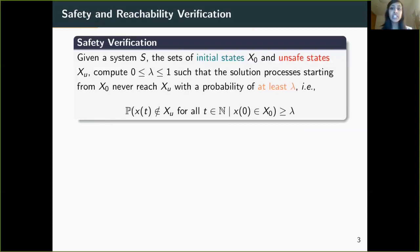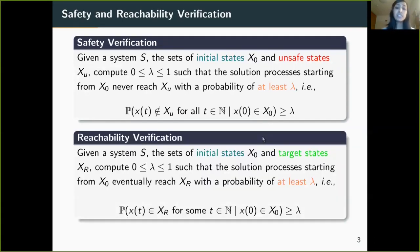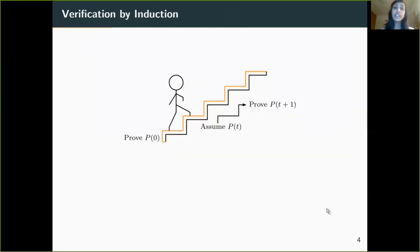For a safety verification problem, we would like to compute the minimum probability with which the solution processes do not visit the unsafe regions, given that they start from an initial set of states. The reachability verification problem is to compute the minimum probability with which the solution processes do in fact reach the target states starting from the initial set of states.